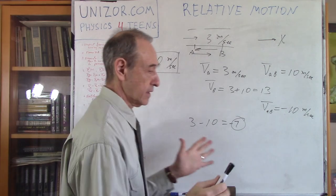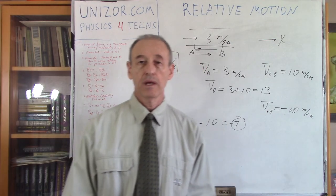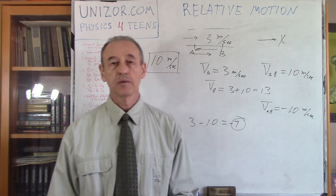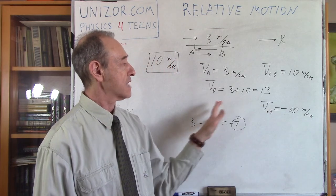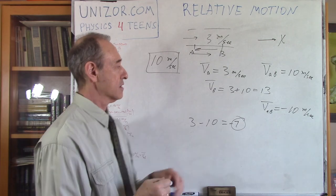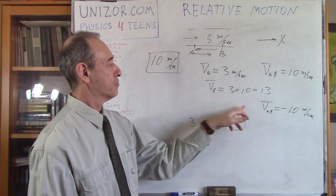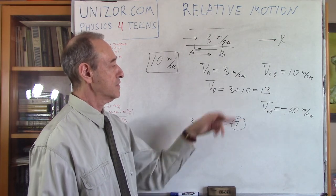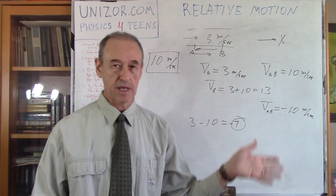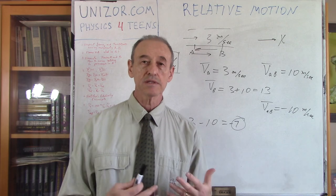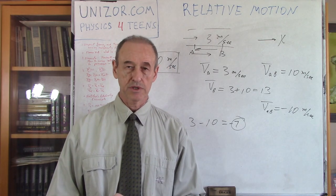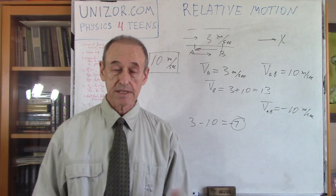Basically, those are all the example problems. The most important takeaway is this type of addition or subtraction: VA plus VAB equals VB, or VAB equals VB minus VA — the same thing in both cases. These examples illustrate Galileo's relativity principle. That's it for today — thank you very much and good luck.